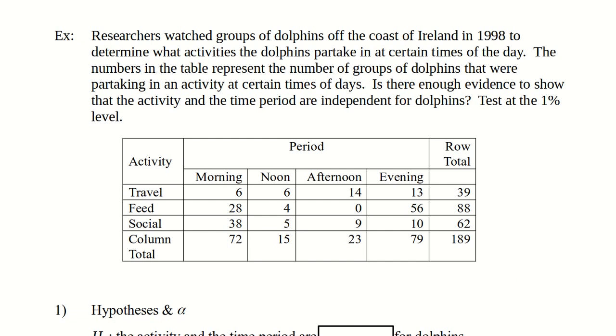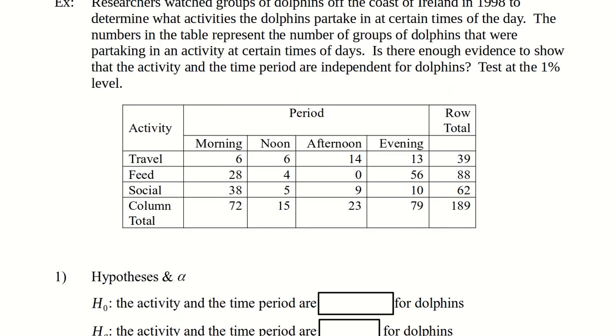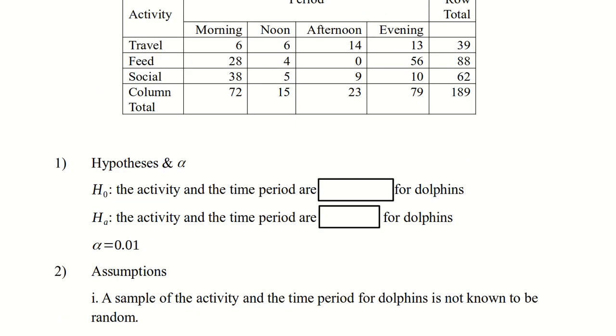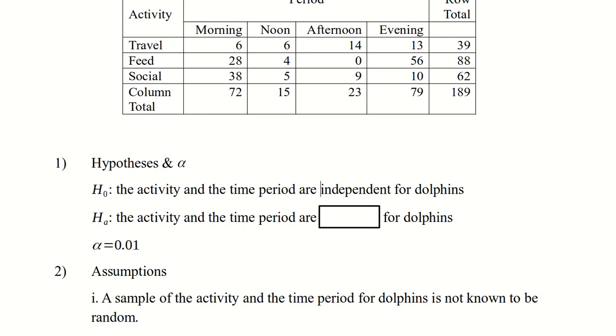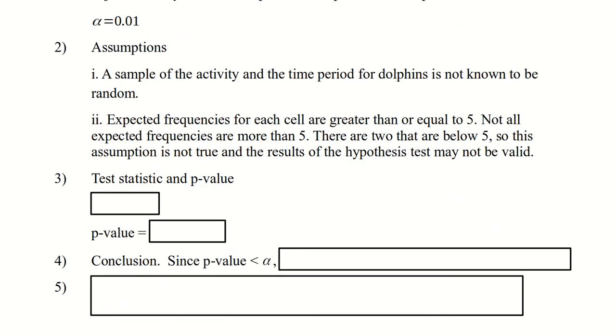We're asked to test, so we're doing a hypothesis test, whether there is evidence to show that the time and activity are independent. So that will be our null hypothesis. We're also asked to test at a one percent level of significance. So our hypothesis is that the activity and the time period are independent for the dolphins, and the alternative hypothesis is that they are dependent. Our alpha is 0.01.